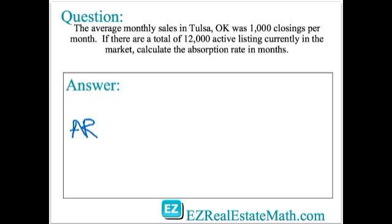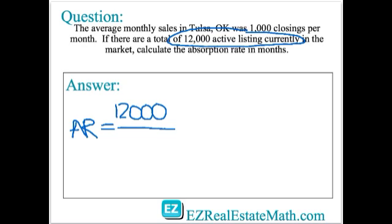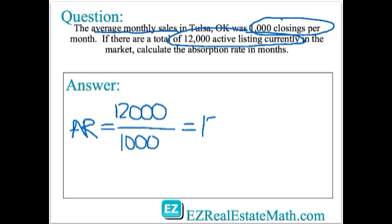To do that, the absorption rate is the total number of active listings — so that's 12,000 — divided by the average monthly sales, which is 1,000 closings per month. And so you get 12 months.